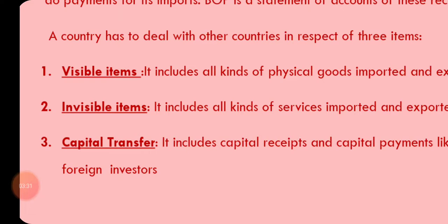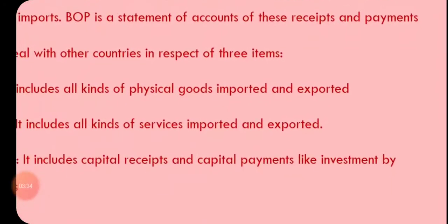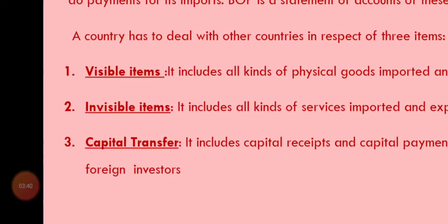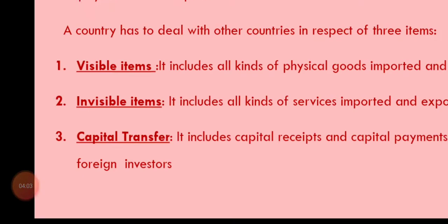Both visible items (goods) and invisible items (services) are included in the Balance of Payment schedule. The third item is capital transfer — it includes capital receipts and capital payments. For example, investment by foreign investors: foreign investors come to our country and bring capital in — this is known as capital inflow. And our investors also go to the outside world and invest there — that is capital outflow. Whether it is a capital inflow or outflow, these capital transfers are also included in the Balance of Payment.